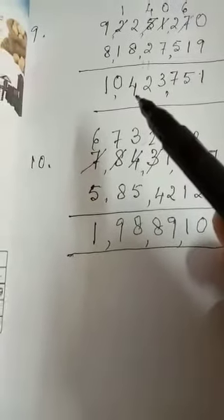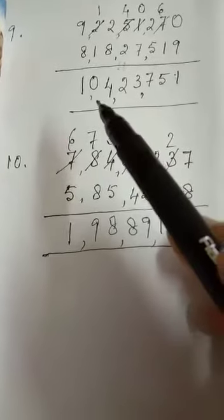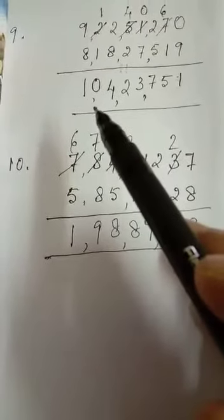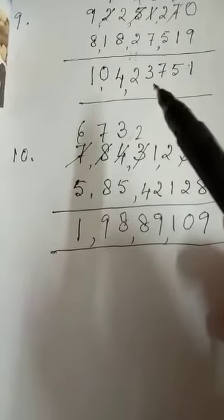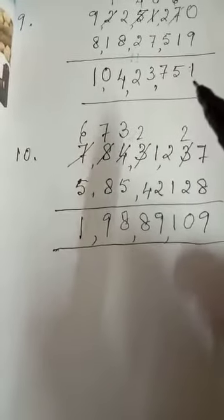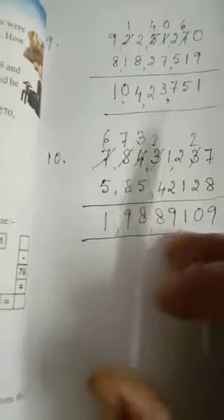So, your number that you get. Therefore, 1 crore, 4 lakhs, 23,751. Alright. Let us now start the last sum, sum number 10. Again, you read the question from your book.